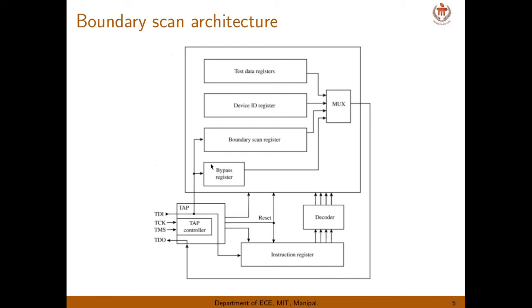Next is the bypass register. When enabled, it bypasses the boundary scan register. When many chips are on a single board and you want to avoid boundary scan testing of a particular chip, you can enable the bypass register so that the boundary scan cells of that chip are skipped, saving those clock pulses.